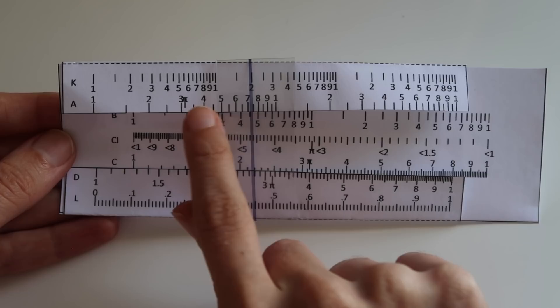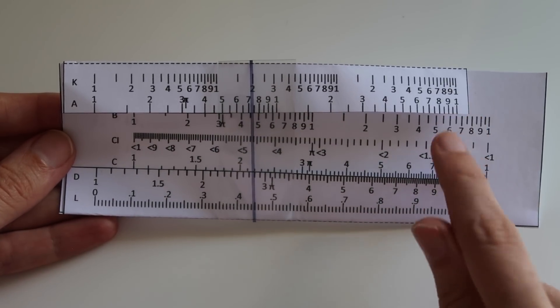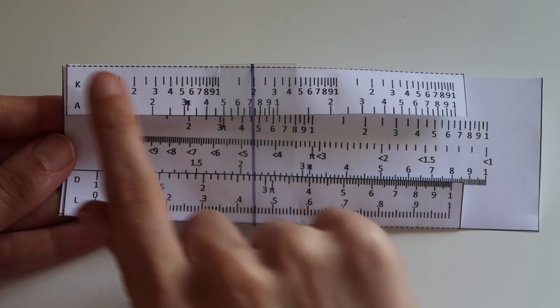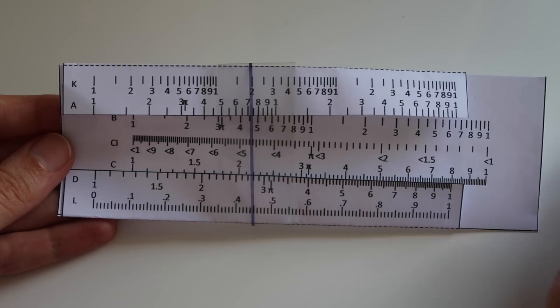The scale is sort of set up so that it's taking the antilog for you and all you need to do is worry about sliding it around. I think these scales up here, A is to do with squares and square roots, and K is to do with cubes and cube roots.